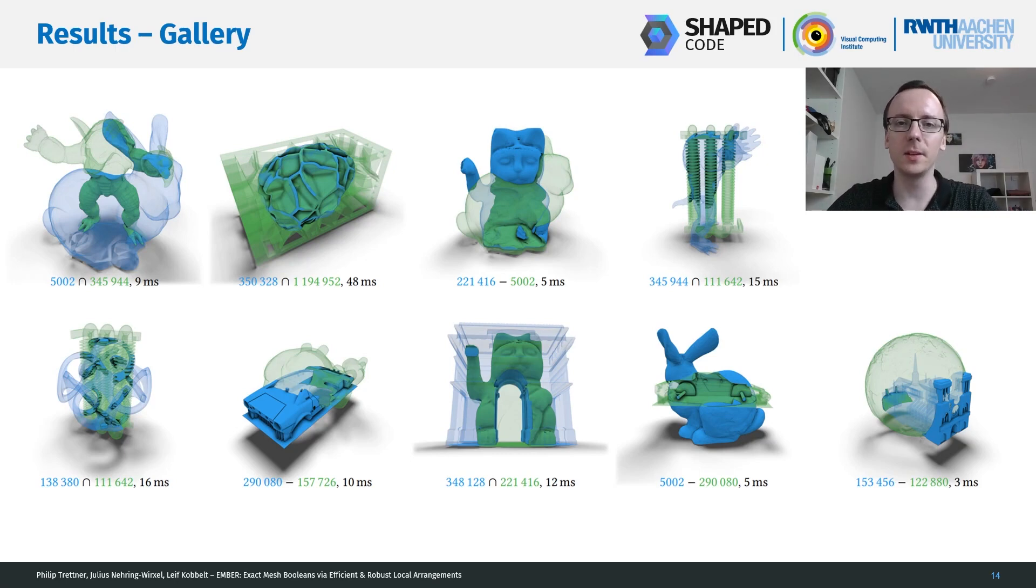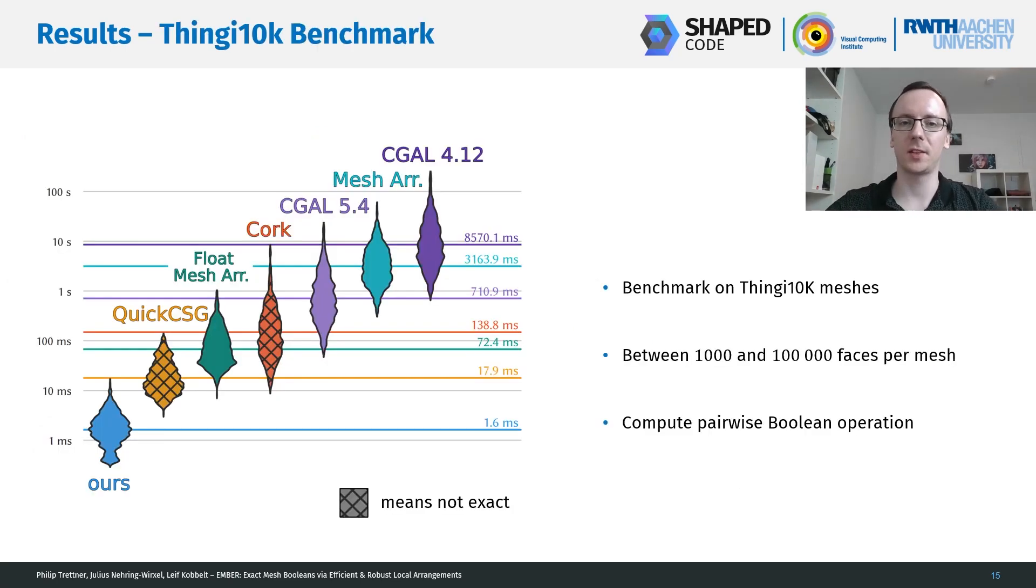This performance is actually representative. So here you see a few other experiments of meshes with varying size and different Boolean operations. We also did a large-scale performance benchmark on the Thingy10k dataset where we compared against other methods and took a few thousand meshes between 1,000 and 100,000 faces per mesh and computed a pairwise Boolean operation between them. And here in this logarithmic scale, you see that our method is orders of magnitude faster than the previous state-of-the-art, even faster than the inexact methods.